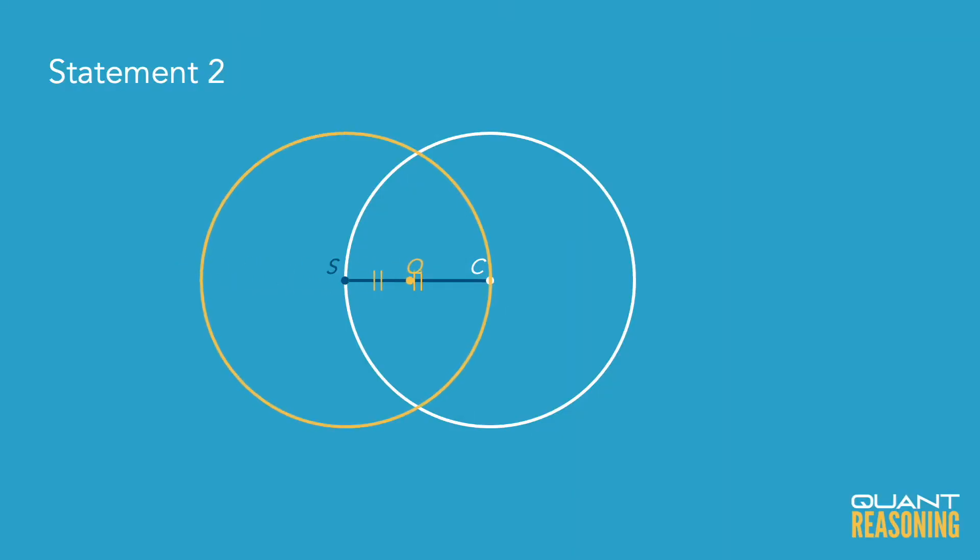Q could actually be at the same point as C. Q could be the center of the circle. But is it possible that Q is on the circumference? Are there points on the circumference that are exactly one radius away from point S? Yeah, there would be exactly two such points.